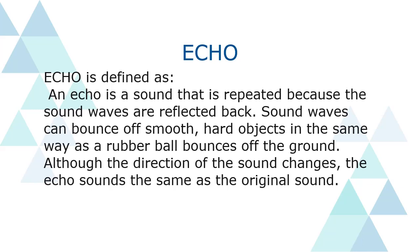an echo is a sound that is repeated because the sound waves are reflected back. Sound waves can bounce off smooth, hard objects in the same way as a rubber ball bounces off the ground. Although the direction of the sound changes, the echo sounds the same as the original sound, but the intensity of sound decreases.